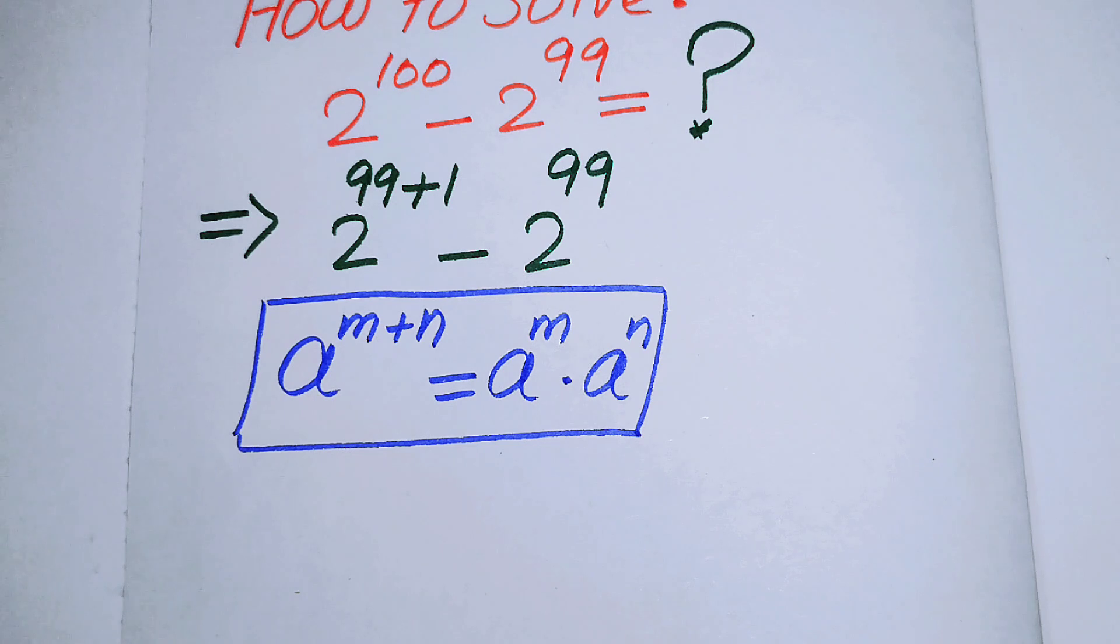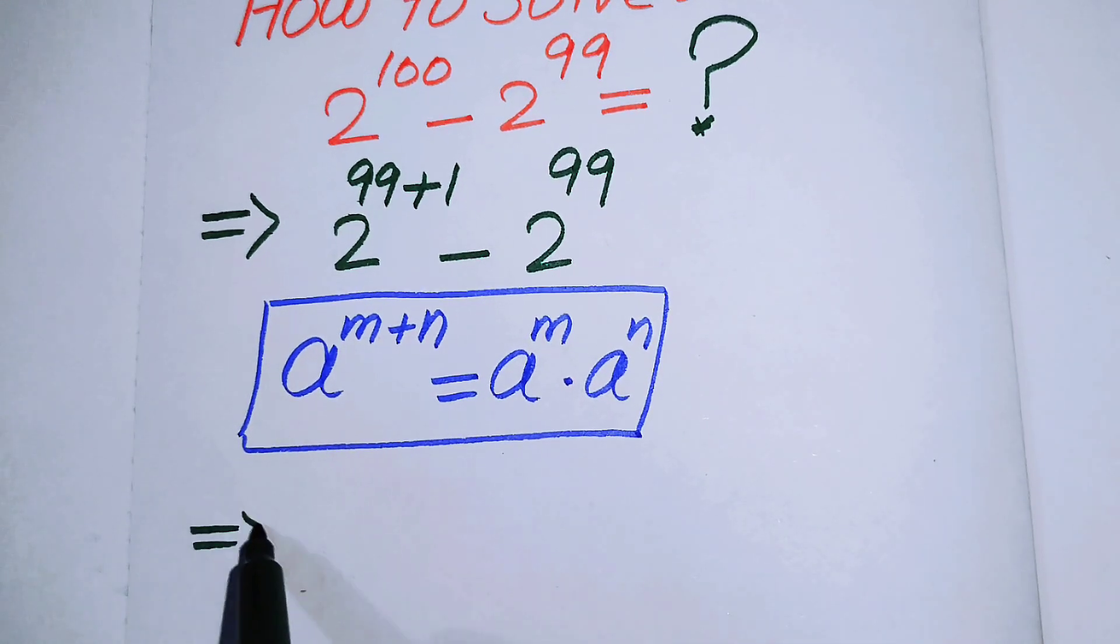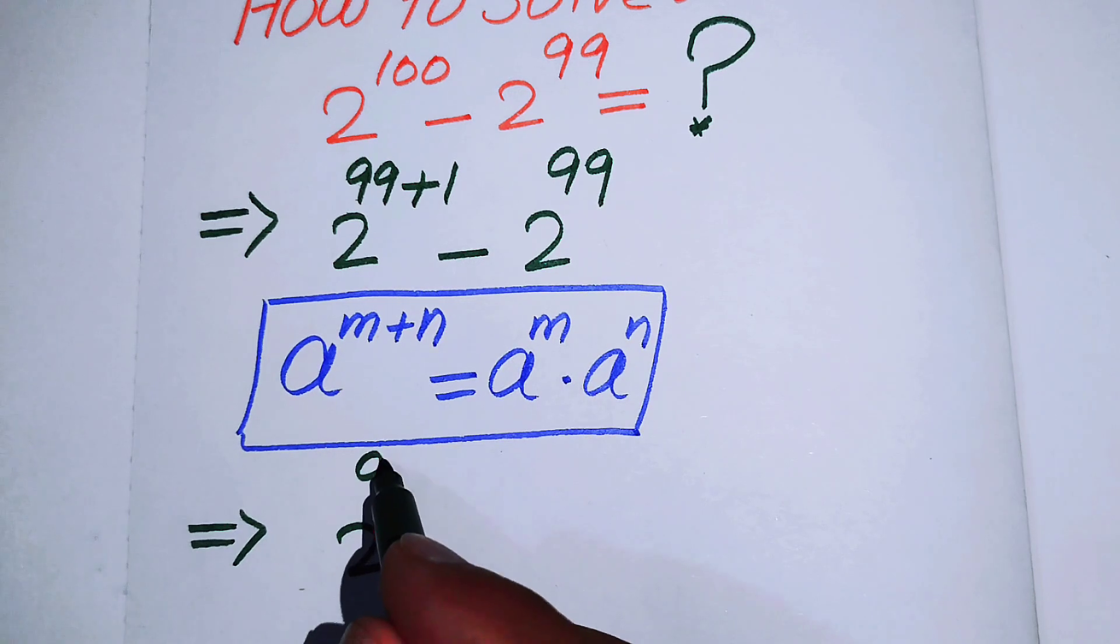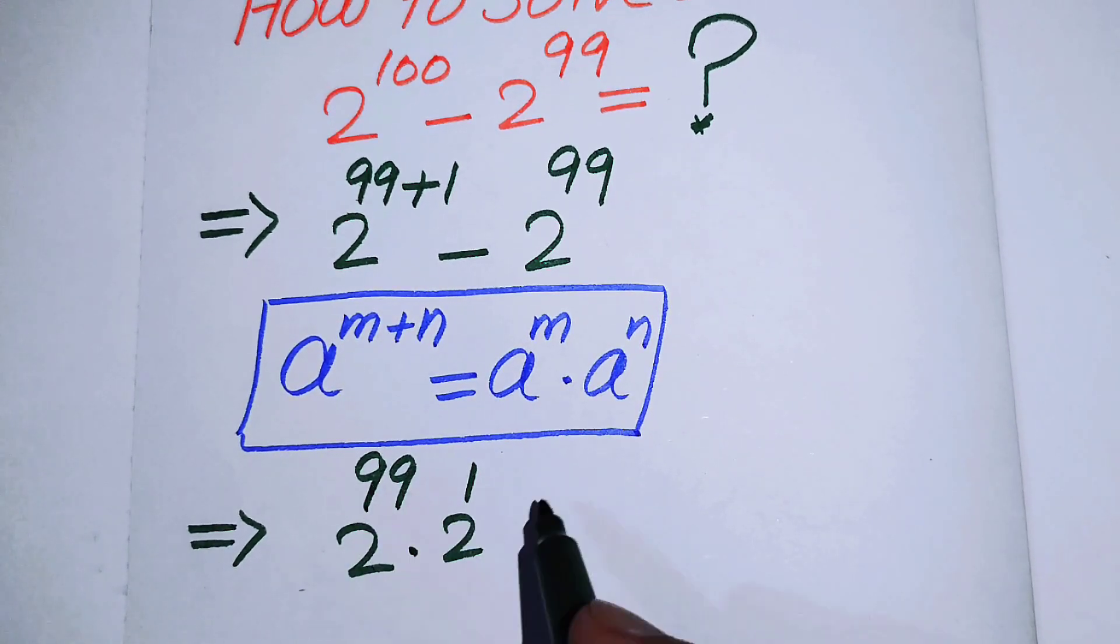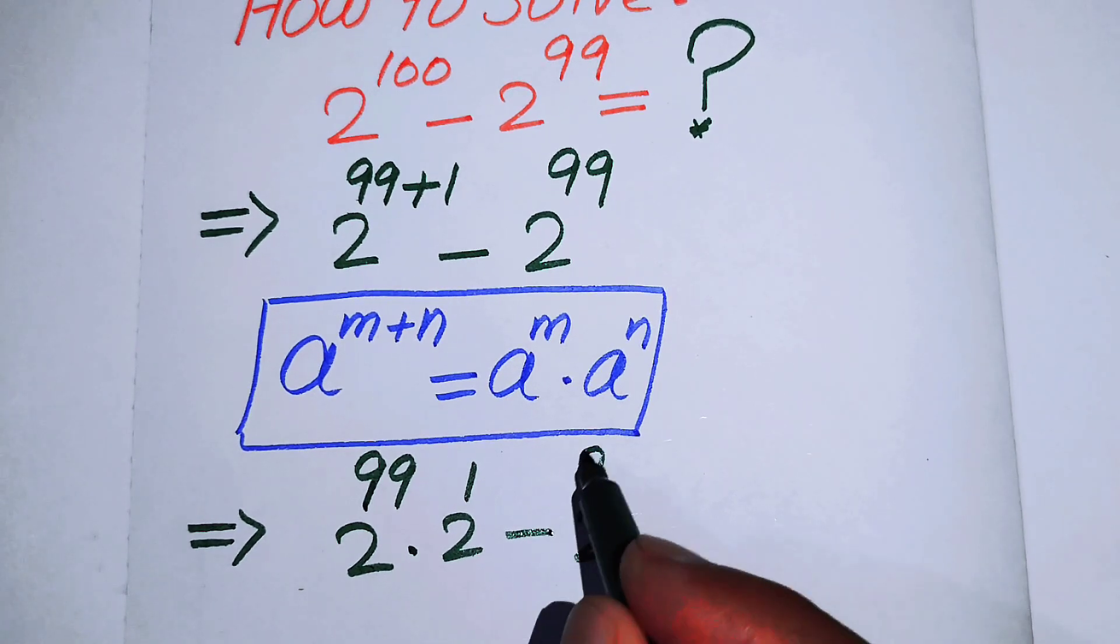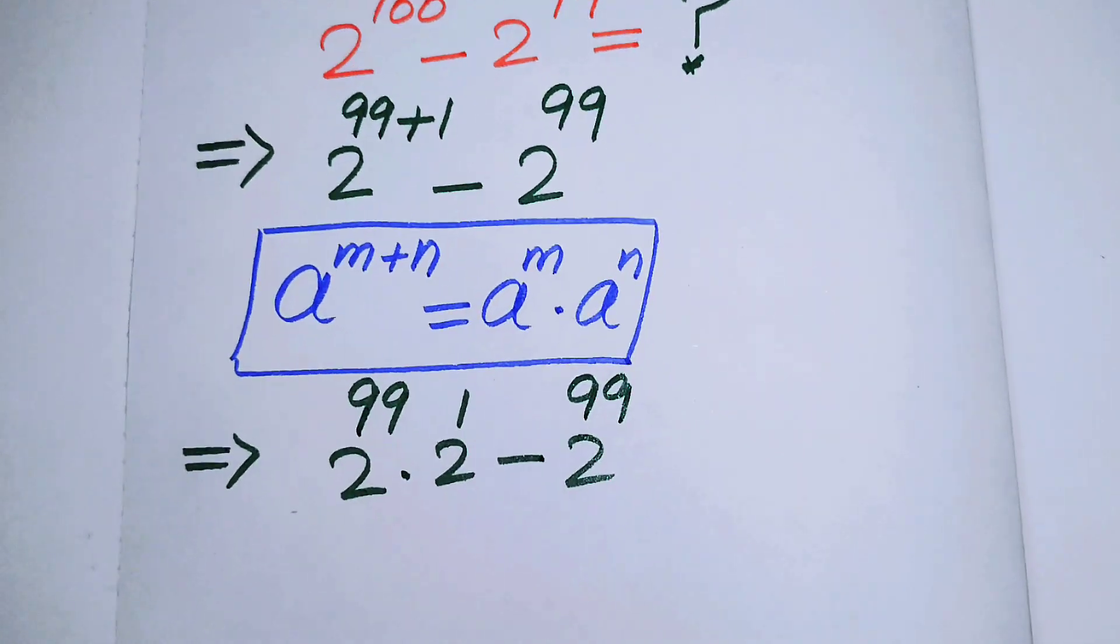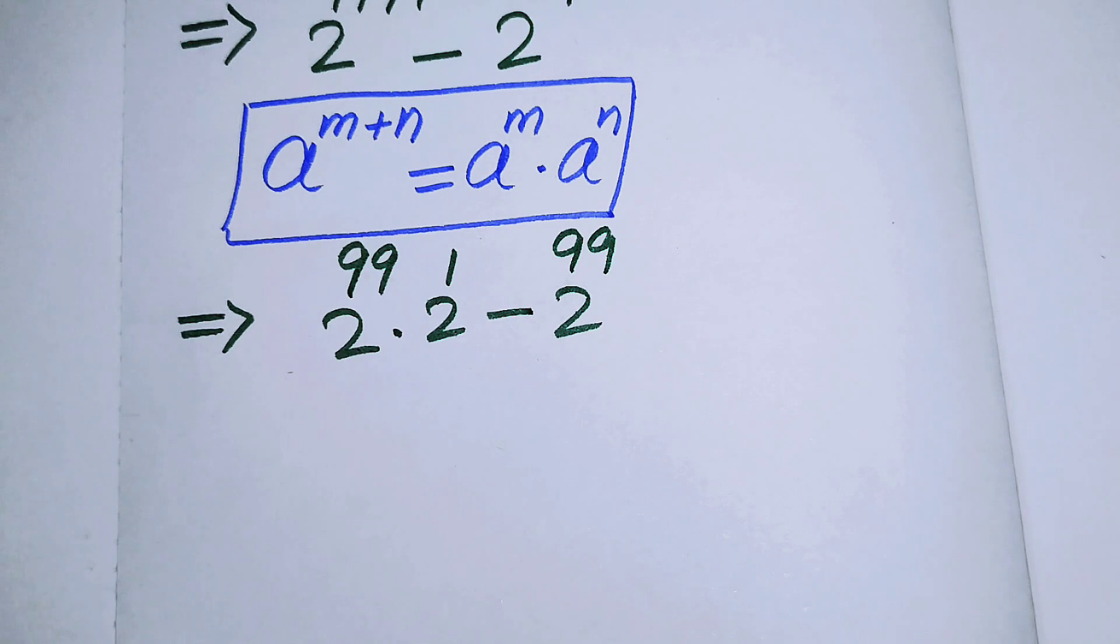According to this law, we can break the exponent of this term and you will get 2 to the power of 99 times 2 to the power of 1, minus 2 to the power of 99. Here you see that we have 2 to the power of 99, the term which is involved in both terms.